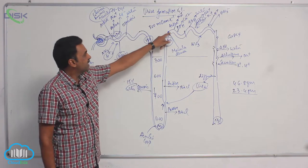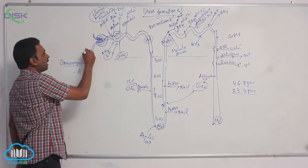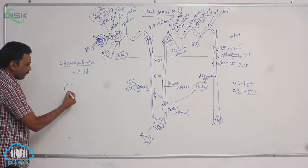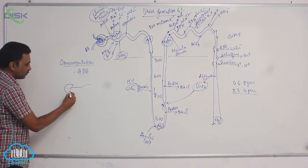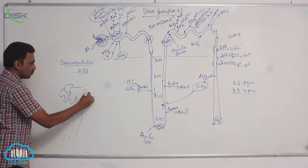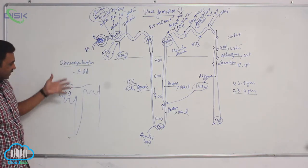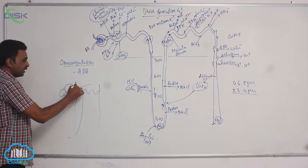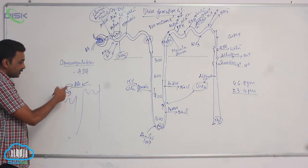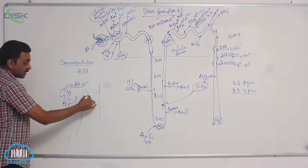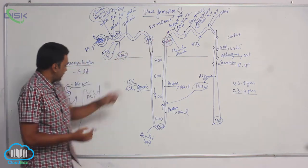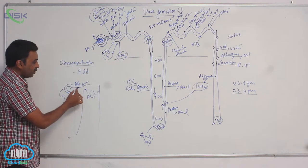Now macular densa is in close proximity with efferent arteriole. How is that? I can draw that this way also. When I draw the same nephron in this direction, this is the efferent arteriole which is coming in this direction and this is Bowman's capsule, proximal convolutions, distal convolutions. See now macular densa is here, efferent arteriole is here.